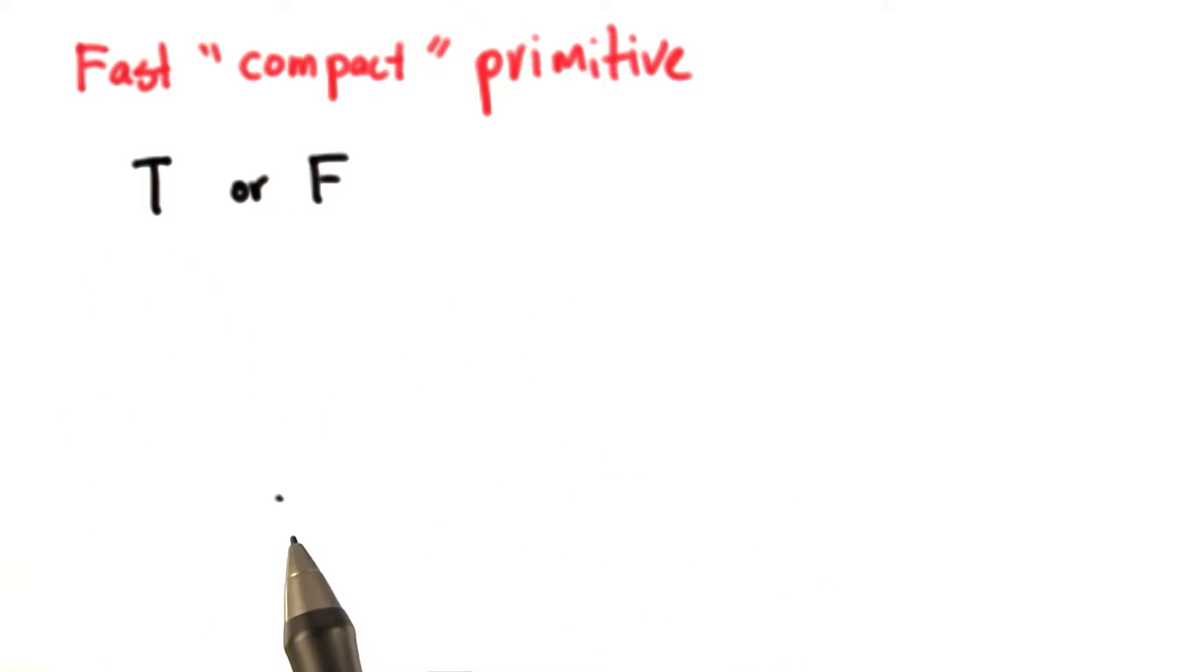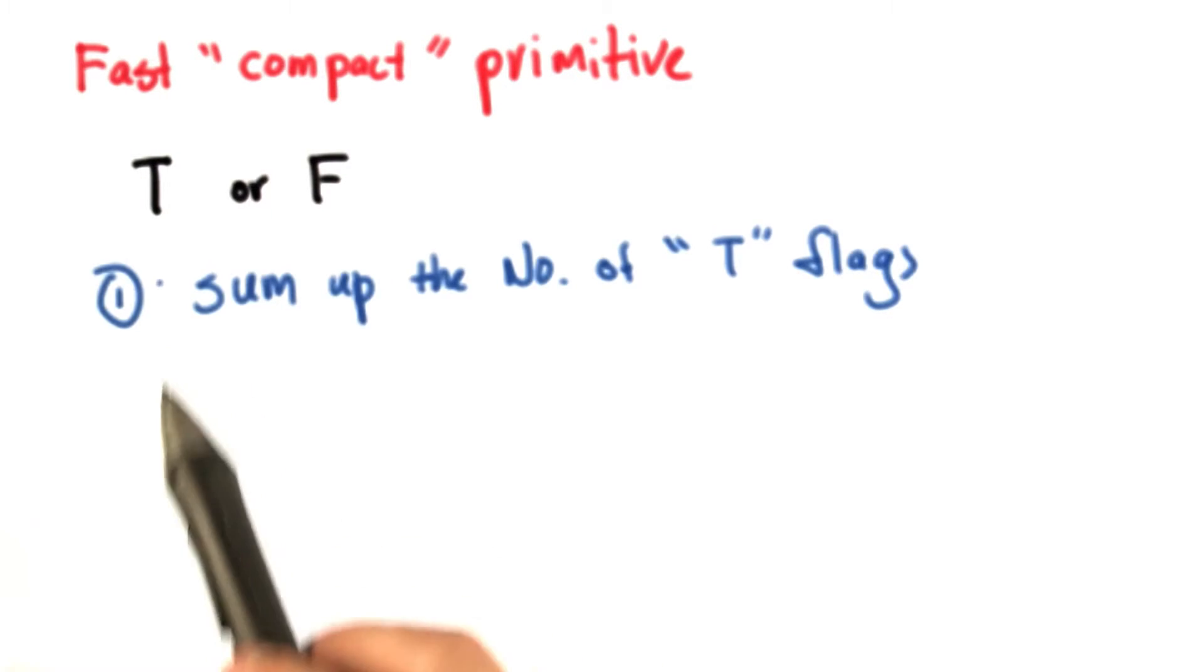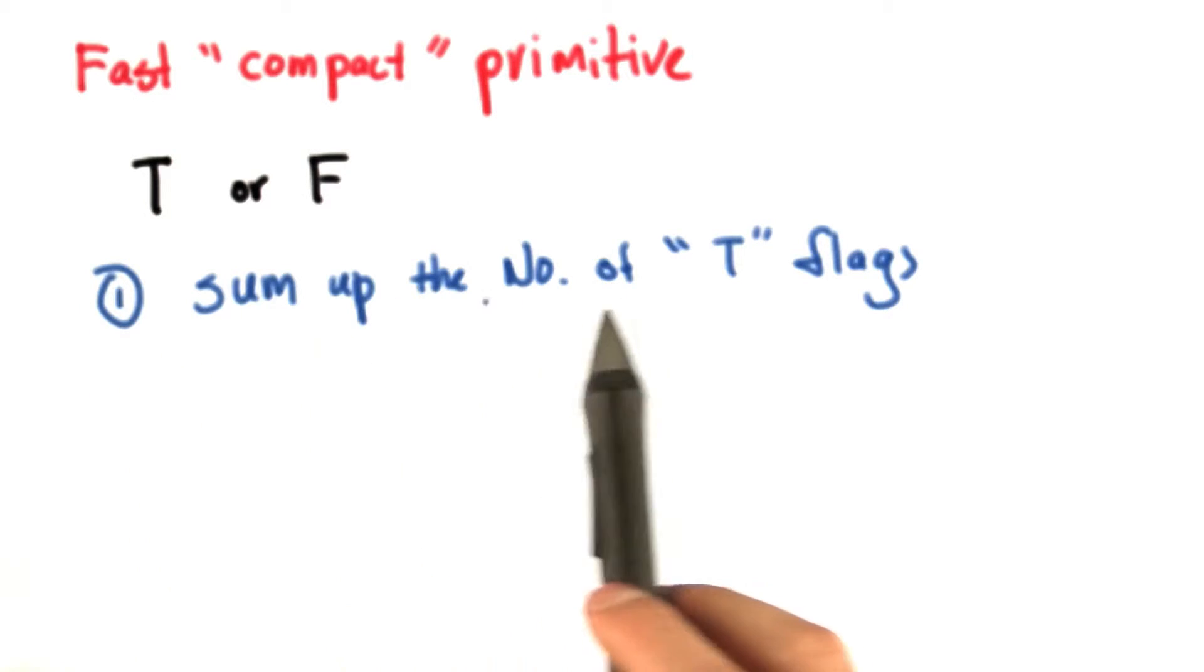So in this problem, the strategy that we will do this scan is as follows. For step one, within each warp, we will sum up the number of true flags.